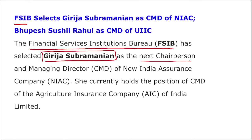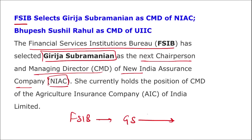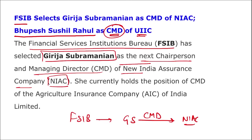Next: FSIB — the Financial Services Institutions Bureau — has selected Girija Subramanian as the next Chairperson and Managing Director of New India Assurance Company (NIAC). Apart from this, Bhupesh Sushil Rahul has been named as the Chairman and Managing Director of UIIC — United India Insurance Company. Girija Subramanian will succeed Neeraj Kumar Gupta.